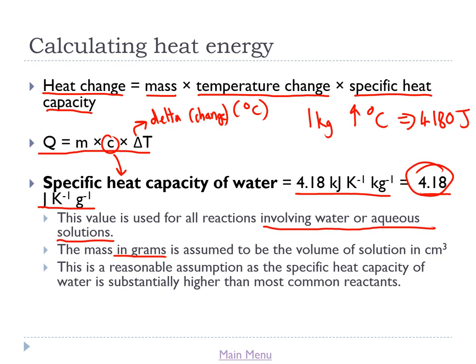We're going to say that the mass in grams is the same as the volume of the solution in centimetres cubed. For example, if we had 250 cm³ of solution involved in our reaction, we would say the mass was 250 grams. That's not 100% accurate — most solutions are slightly denser than water — but the specific heat capacity of water (4.18) is much higher than the specific heat capacity of nearly every other substance, so water's contribution to the energy change is so much greater than anything else that we can largely ignore everything else.